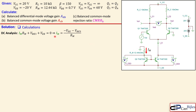Rearranging the KVL equation, IM = (VEE − VBE3) / RM. Substituting VEE = −20V and VBE3 = 0.7V gives IM = (−(−20) − 0.7) / 12.44 kΩ, which yields IM ≈ 1.551 mA.